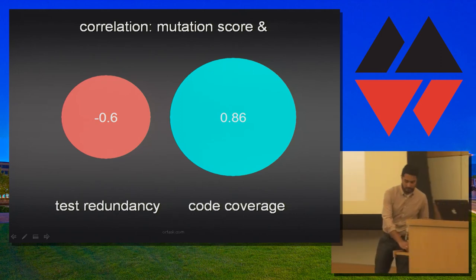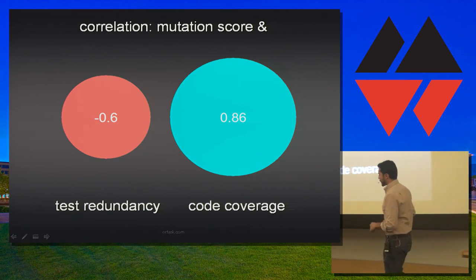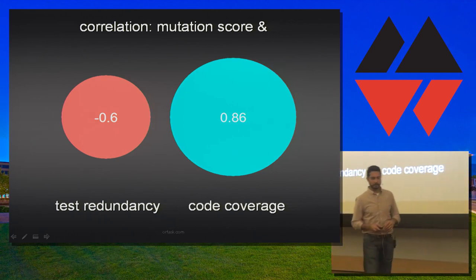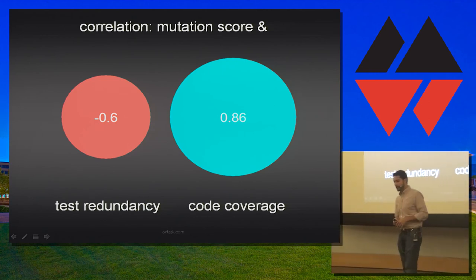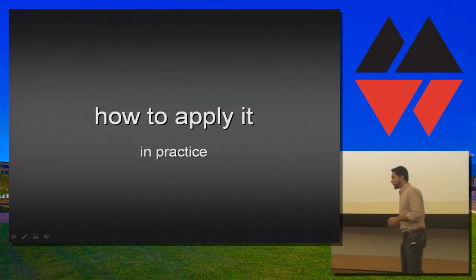So, let's look at correlations between mutation scores, the focal point, and the other two metrics. You can see that these correlations, so of course you have the same correlation as before between code coverage and mutation score, 0.86. That's the same as before, and we already talked about that. But what about test redundancy? It's still negative, meaning that mutation score is still susceptible to redundancy in our tests, but not as susceptible as code coverage.